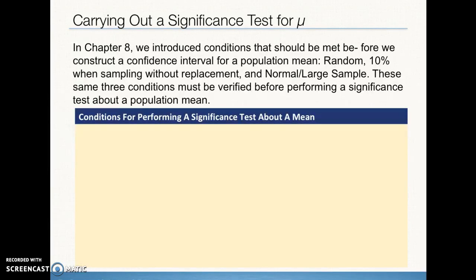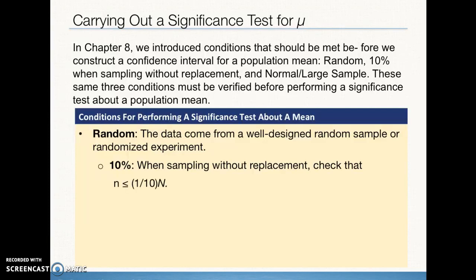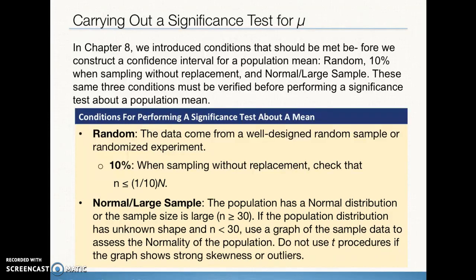We cannot proceed without checking conditions. In our plan, we check whether conditions for inference are met. Remember that random comes from either a well-designed random sample or a randomized experiment. The 10% rule allows us to use our standard deviation formula. The large sample, large counts, or normal condition gives us the shape of our sampling distribution. The central limit theorem may apply if sample size is at least 30, or if the population is already known to be normal. Otherwise, we graph our sample data. Do not use T procedures if the graph shows strong skewness or outliers.